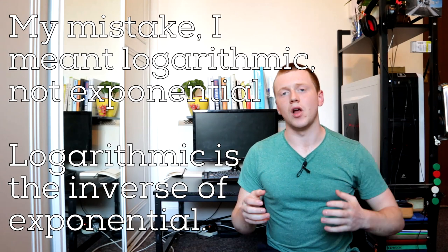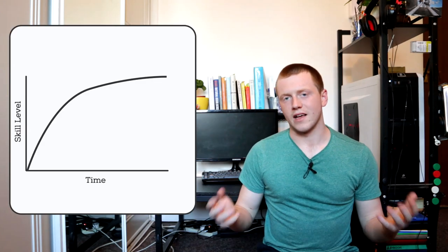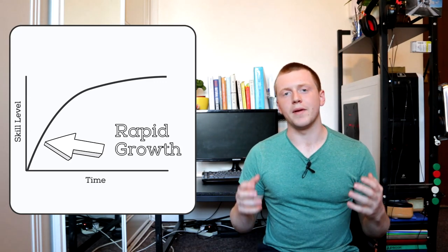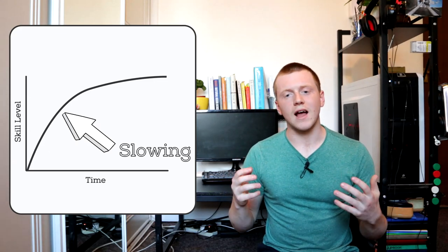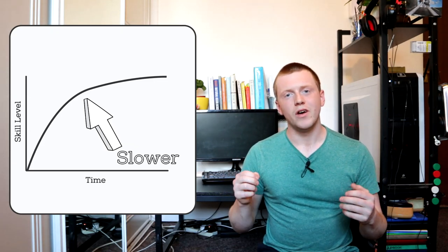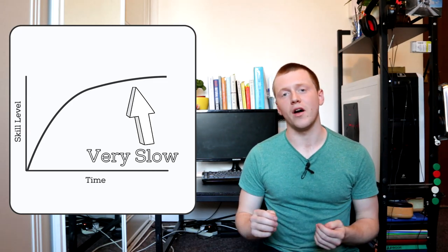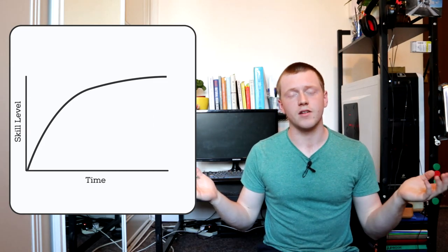The thing is, getting better at a skill is an exponential curve. And it gets slower as you get better. And it looks something like this. When you first start out, you gain skill rapidly. But as you get better, your growth slows down and slows down. Until to just get a tiny bit better takes a huge amount of time. And this is the difference between an expert and an expert generalist.